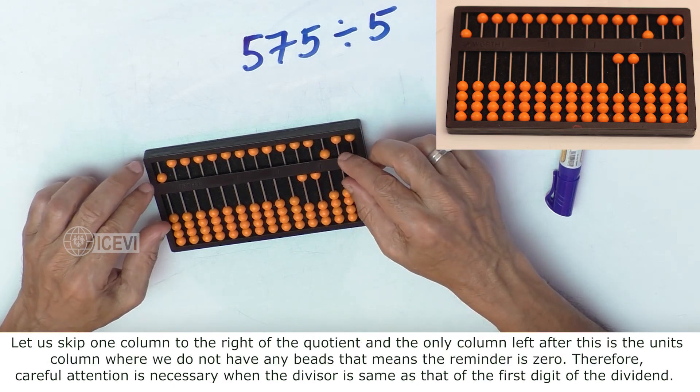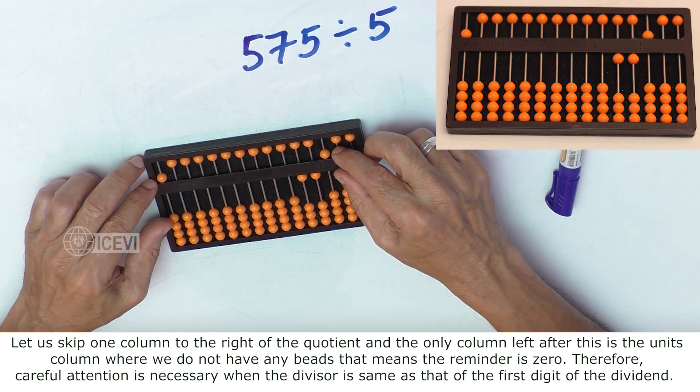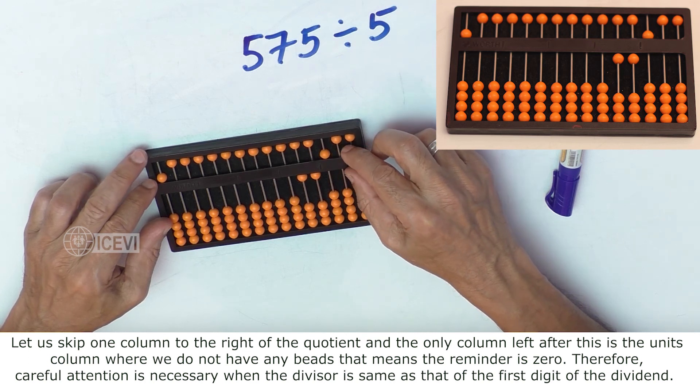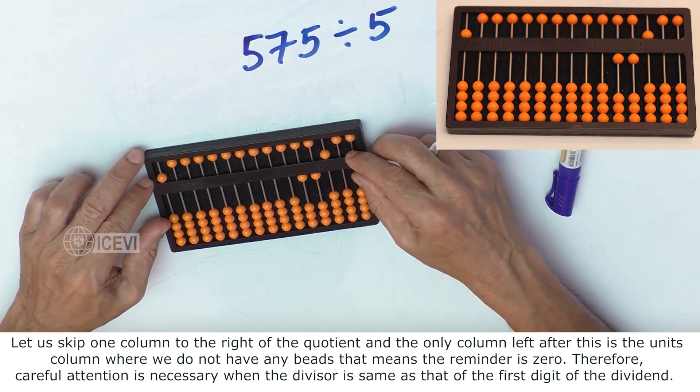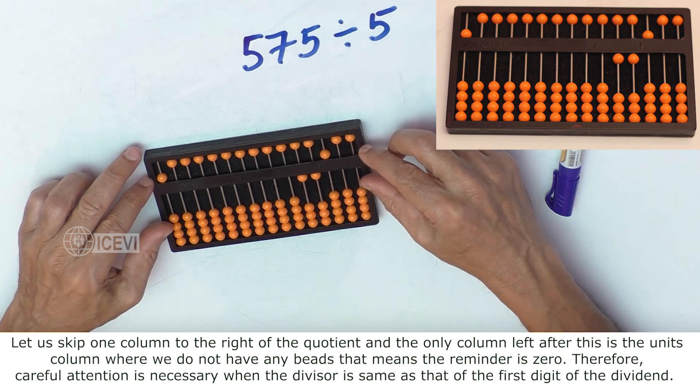Let us skip one column to the right of the quotient and the only column left after this is the units column where we do not have any beads. That means the remainder is 0.